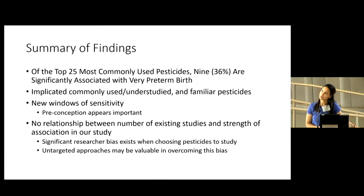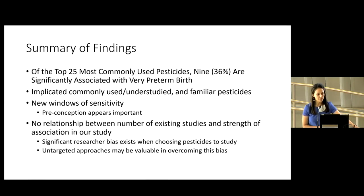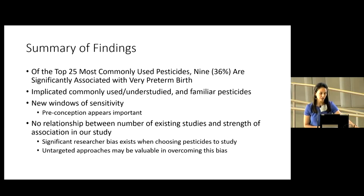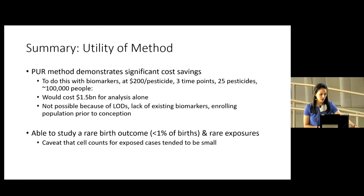Of the top 25 most commonly used pesticides, 9 (36%) were significantly associated with extremely preterm birth. This approach implicated both commonly used understudied pesticides and familiar regularly studied ones. We see evidence for new windows of sensitivity — preconception appears important. There is no relationship between existing studies and strength of association in our study, suggesting significant researcher bias in choosing which pesticides to study, and that untargeted approaches might be valuable in overcoming that bias.